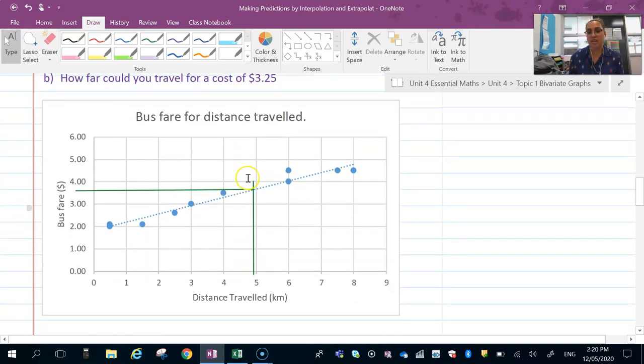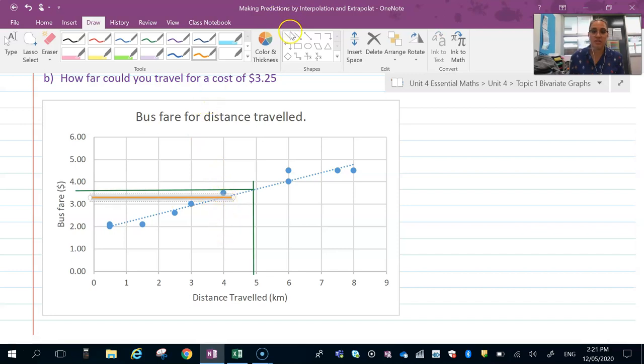Now, how far could you travel on $3.25? You would take it's not quite half, it's a bit of a quarter of the way. Draw your line out to your line of best fit.